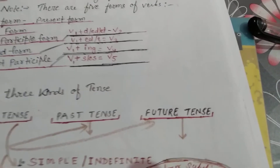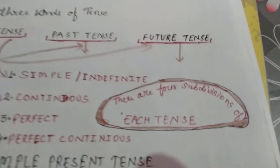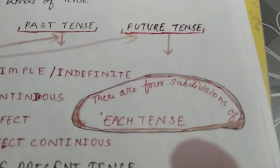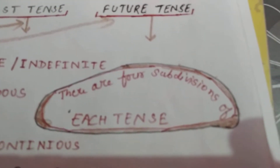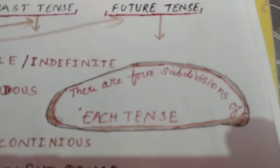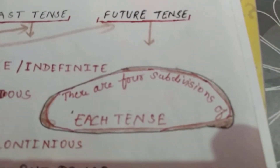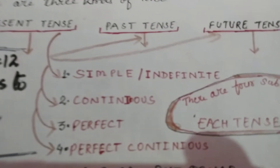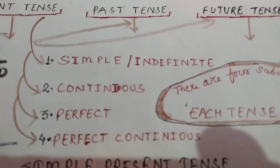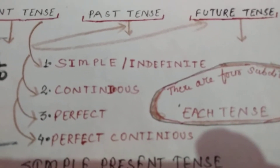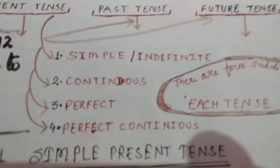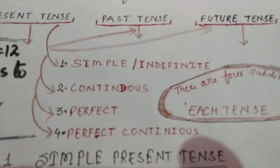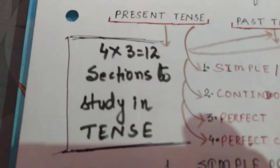There are four subdivisions of each tense. Each tense has got four subdivisions: first, simple or indefinite; second, continuous; third, perfect; and fourth, perfect continuous.